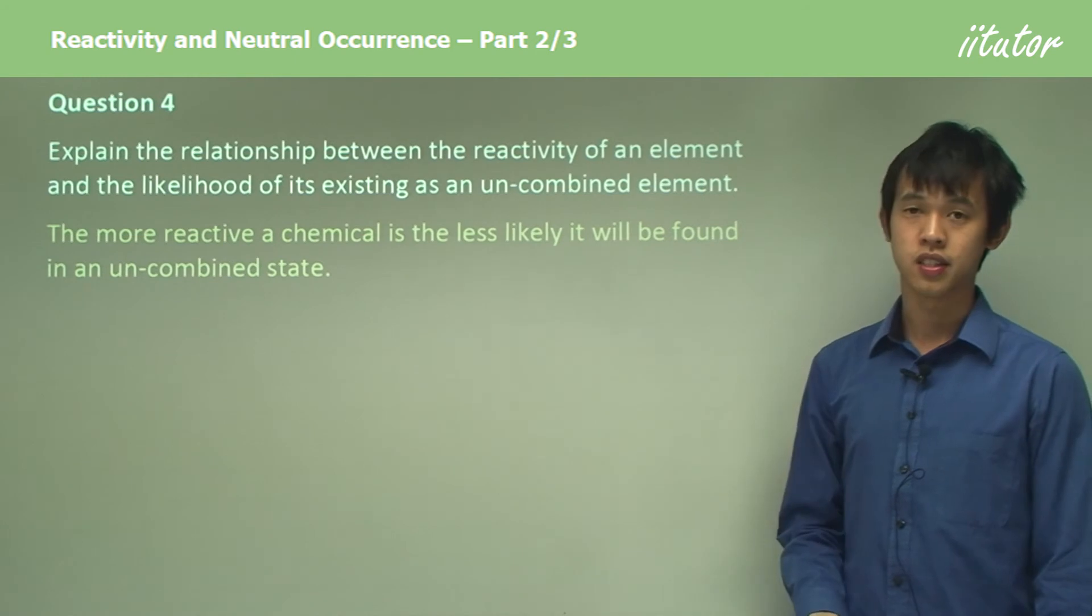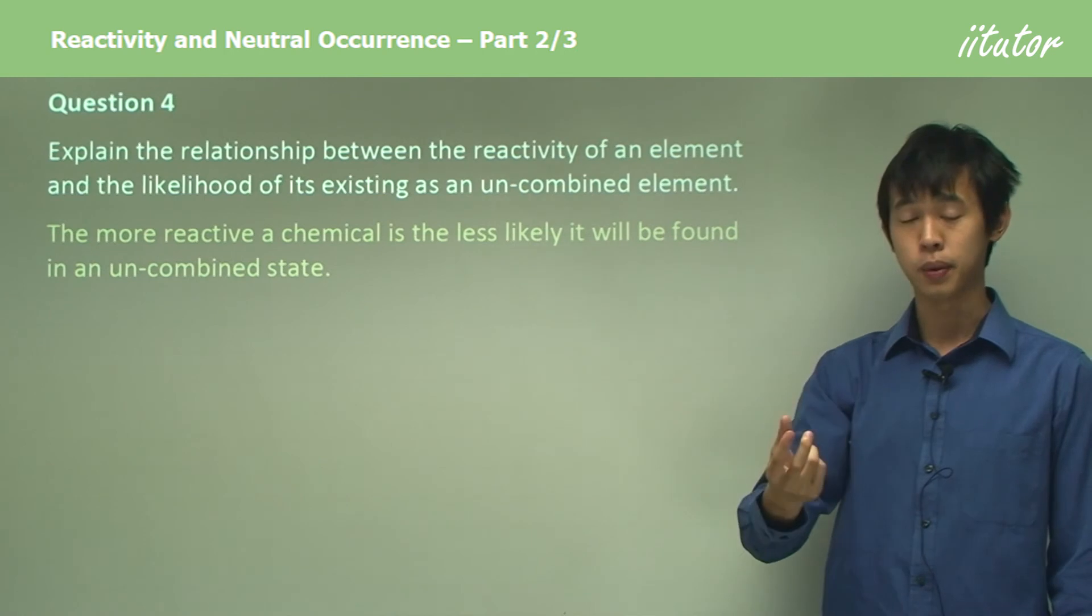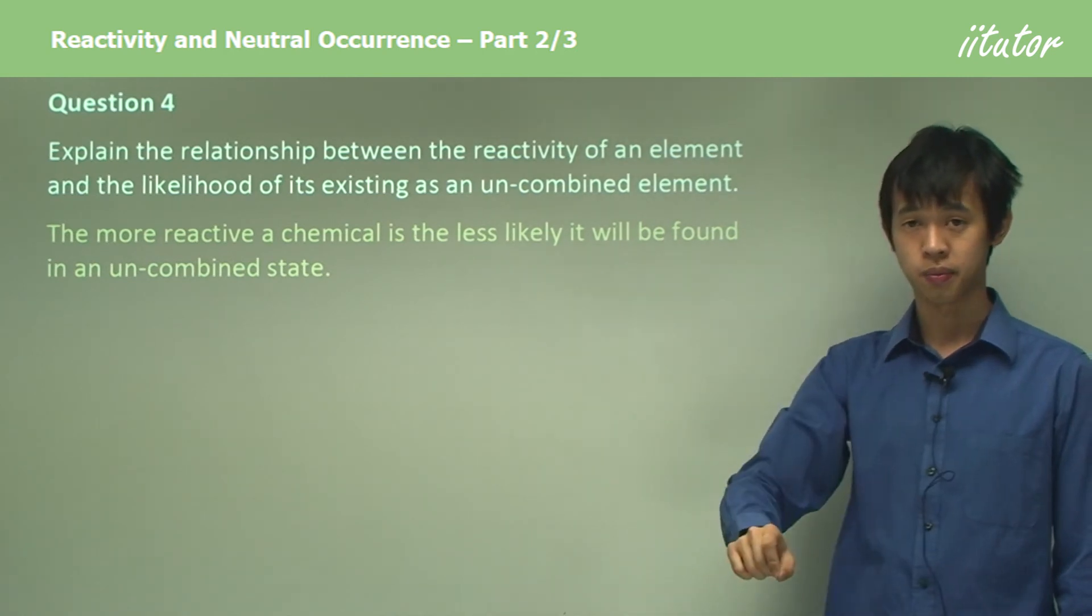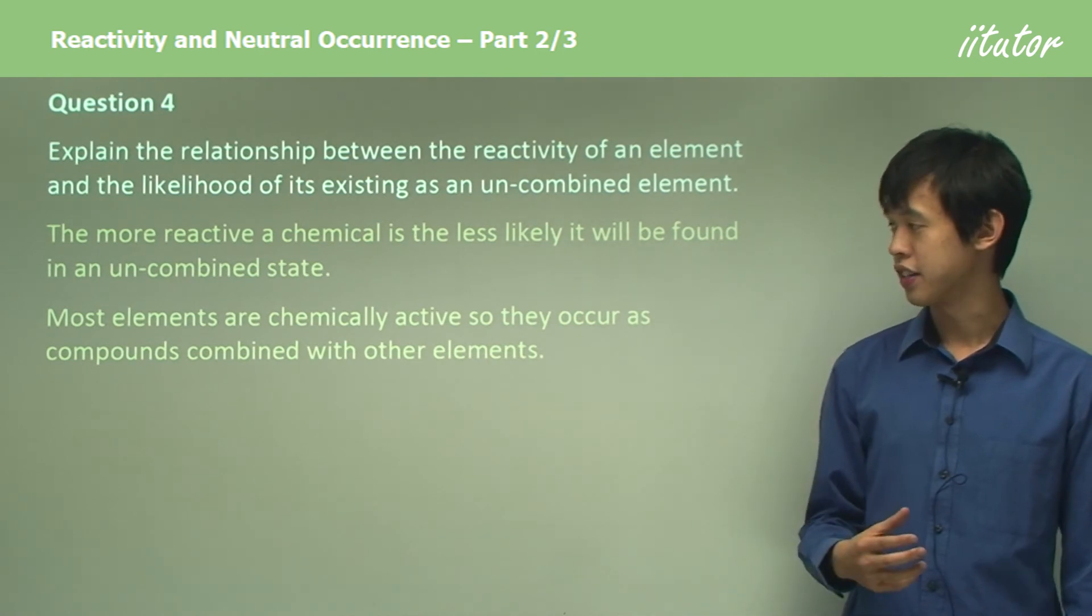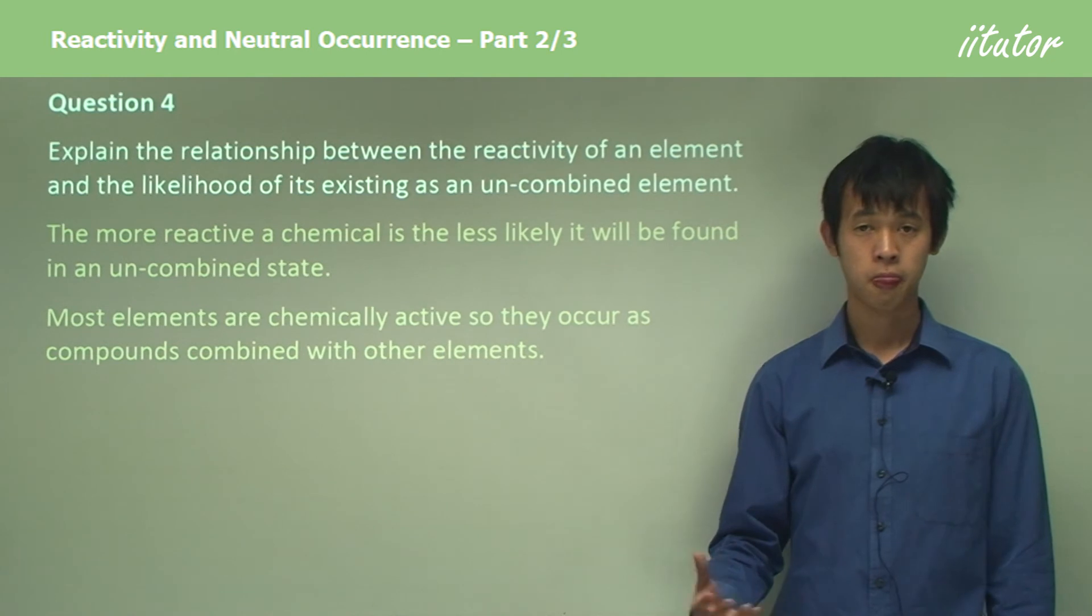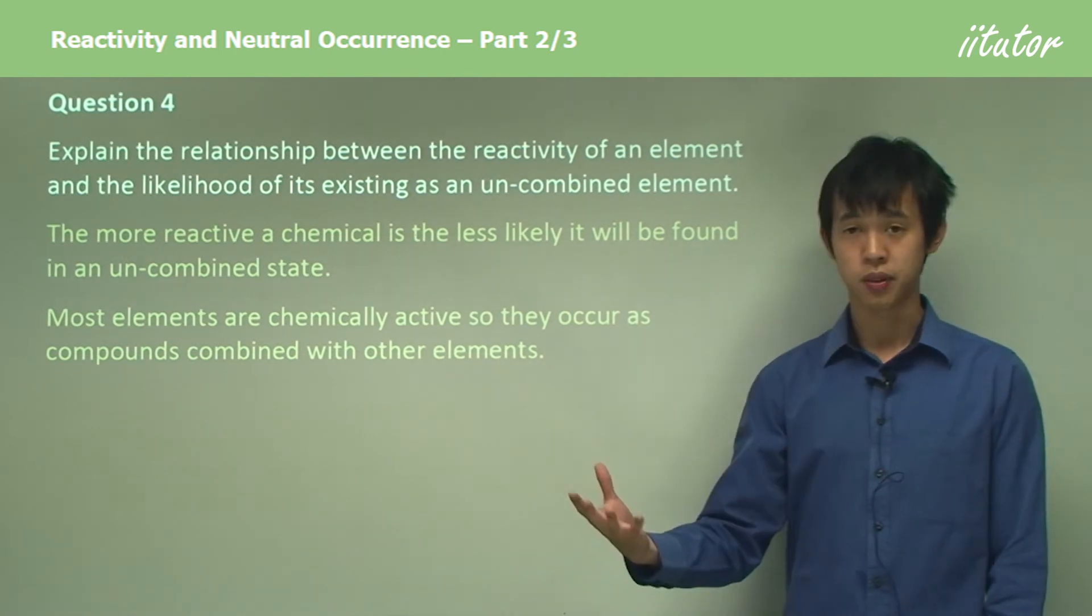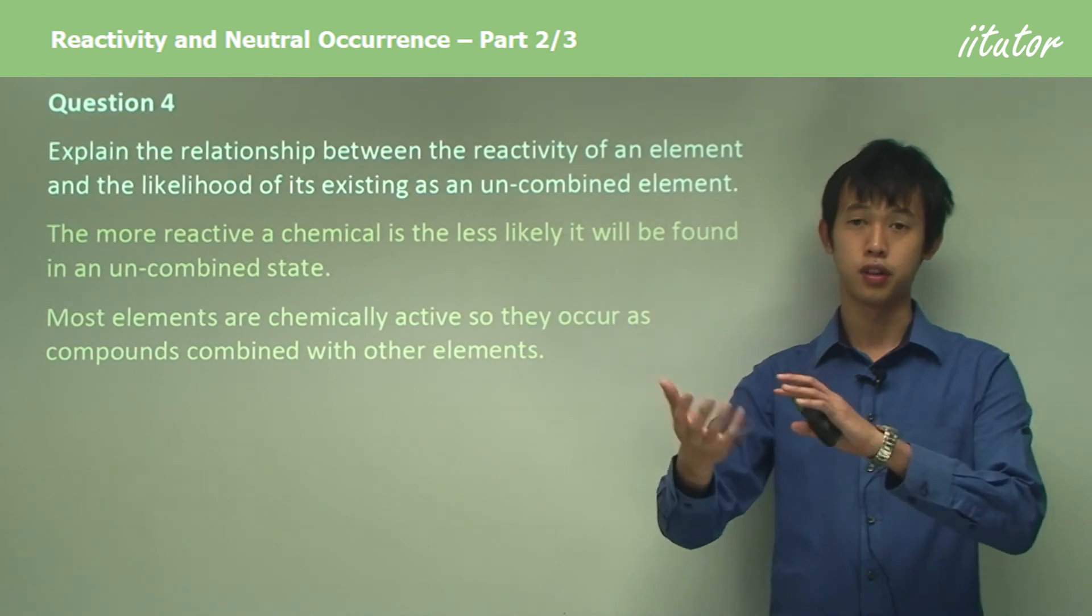As the reactivity goes up, the chance of finding it as an uncombined element goes down. Most elements are chemically active, so they occur as compounds combined with other elements. Because they're so chemically active, they will react with other compounds to give you new compounds, and so we rarely find them in pure form.